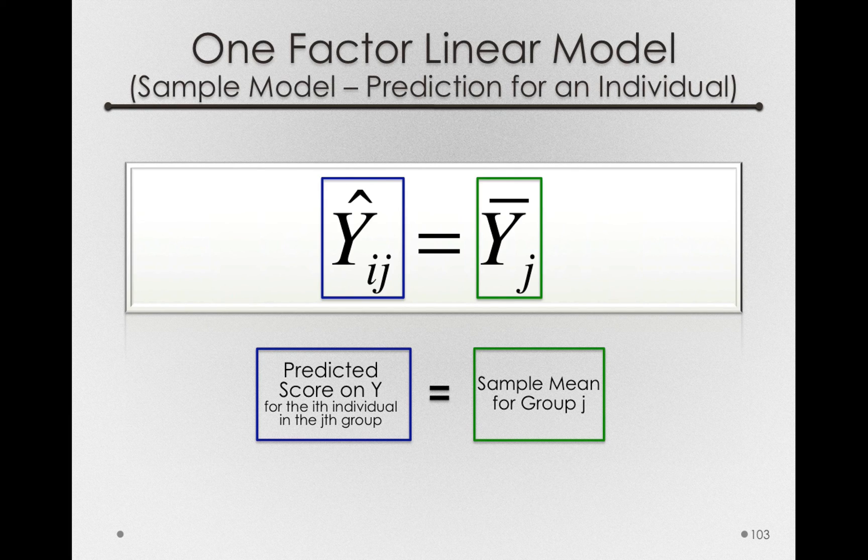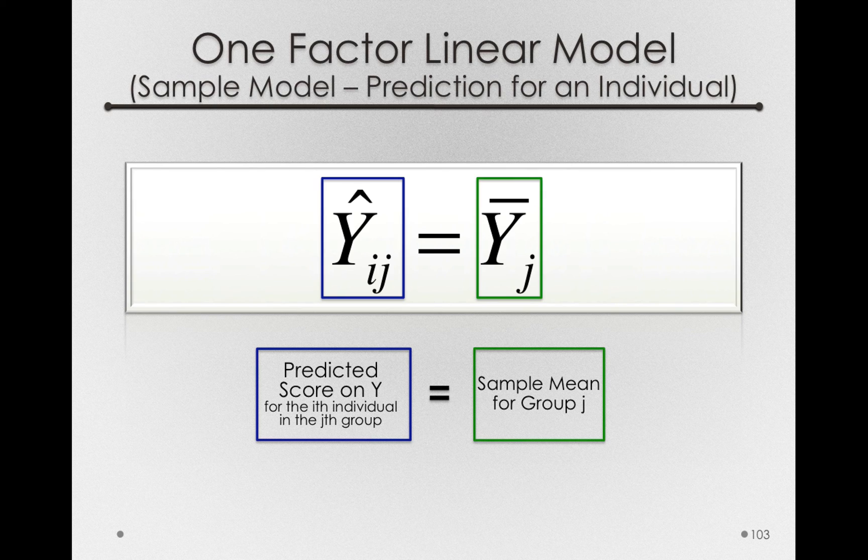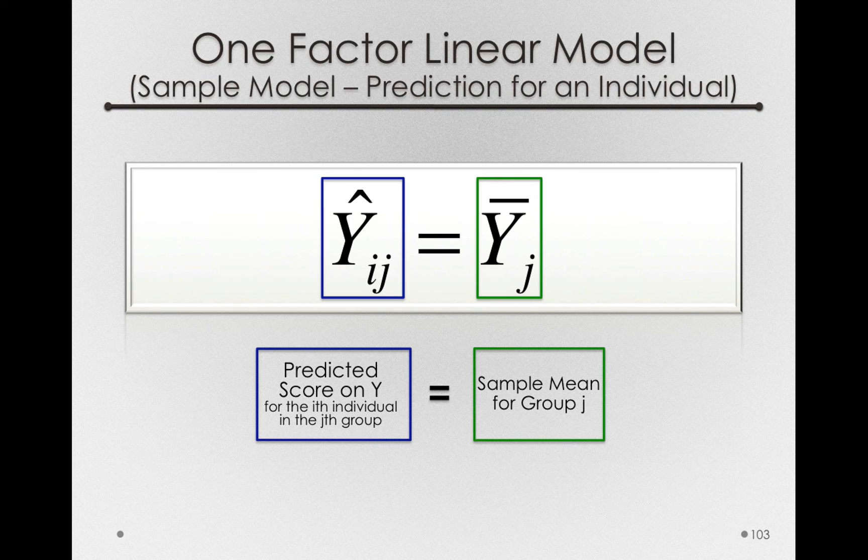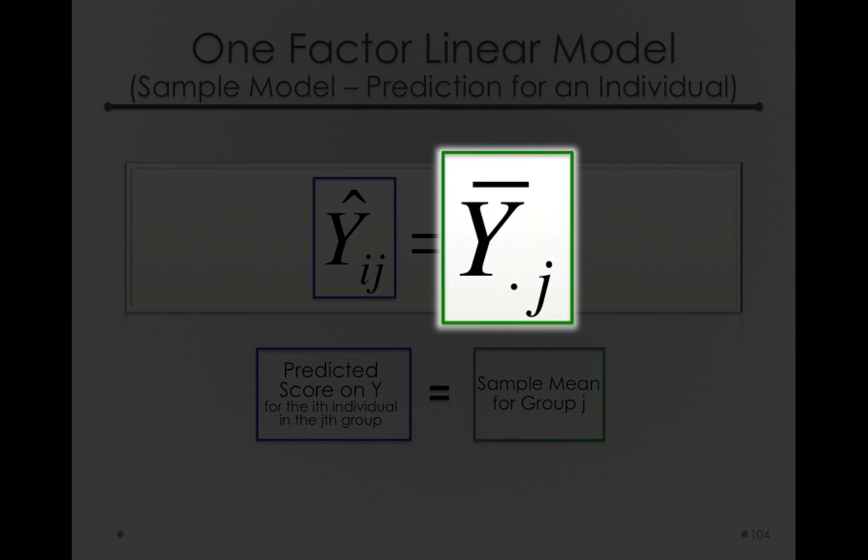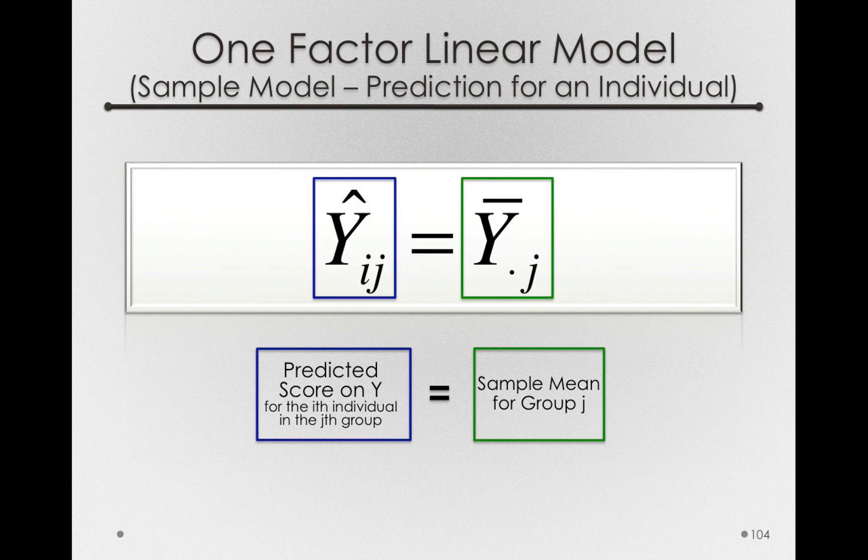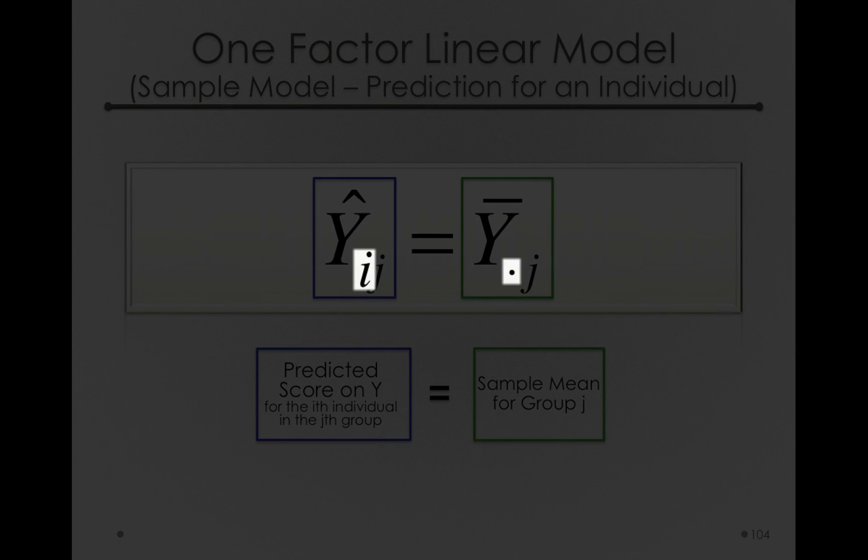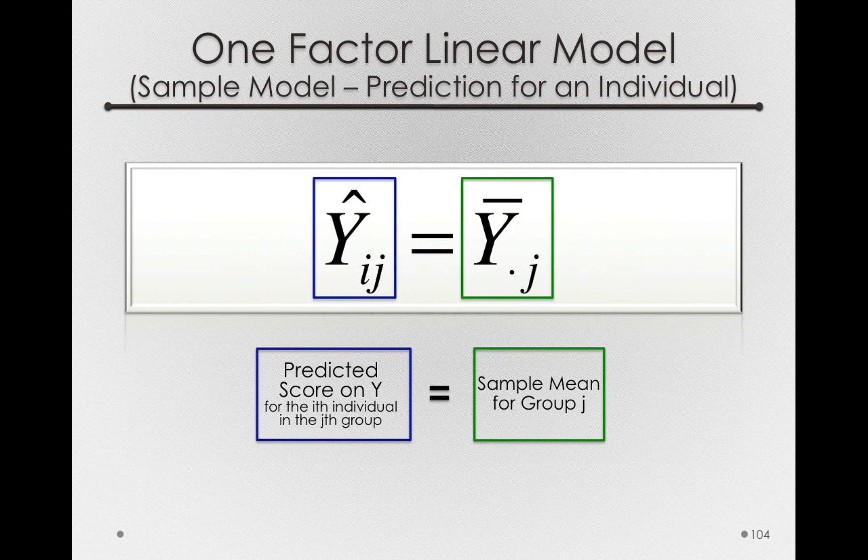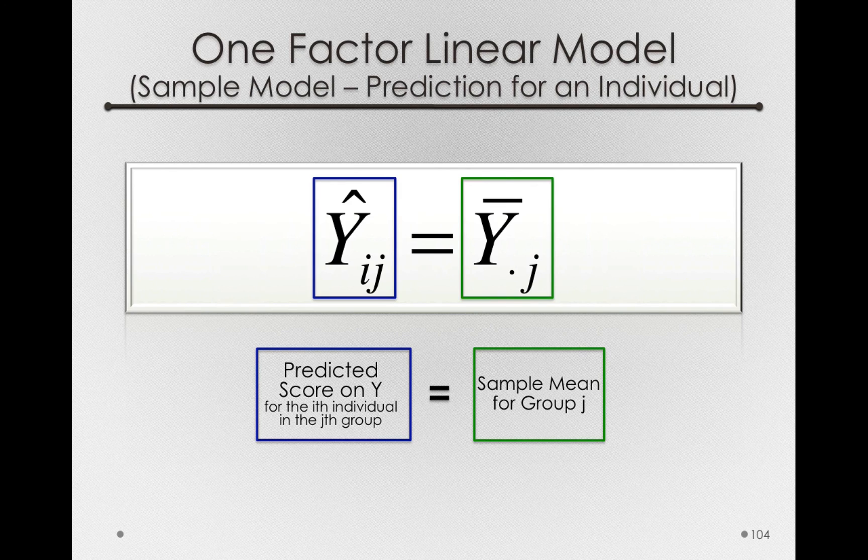Now before we go on, I want to show you one more convention that will be important for us as we move forward. That is, with the Y-bar j, we're actually averaging over all the individuals in the j-th group. That is, if we're talking about the group mean for Delta, Y-bar 1, we're really averaging over all the individuals or the i's in that group. So formally, for the notation, we actually write this group mean as the Y-bar dot j. Now again, this is simply bookkeeping. It's nothing very complicated. This is simply a way of keeping track of the fact that we average over individuals. And this is really, again, just bookkeeping. It's convenient for us to put that dot there so that when we actually write out subscripts, we know we're not referencing the Y for an individual. We're simply taking the average over all the individuals in that j-th group.